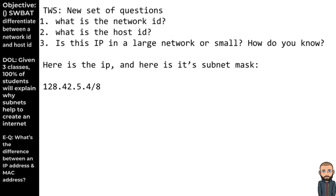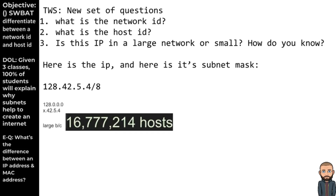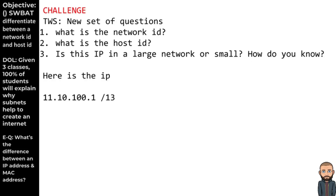I did the first one for you — let's see if the next one can be done all by yourself. Go ahead and pause, then here are your answers. I hope you're understanding this. Here's the next one — pause it and give your best effort. There's your answer. This one looks pretty large — about 16 million devices with unique IPs.